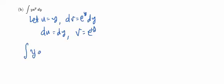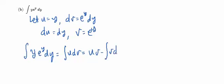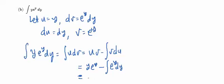So the integral of y e to the y dy equals u dv, which is u v minus the integral of v du. That gives us y e to the y minus the integral of e to the y dy, which then gives us y e to the y minus e to the y plus C. And that's done.